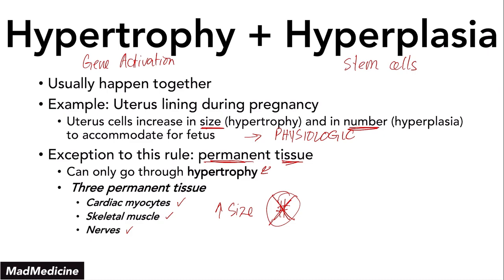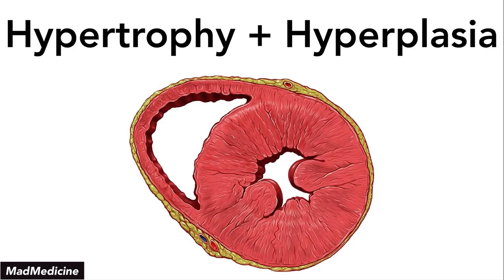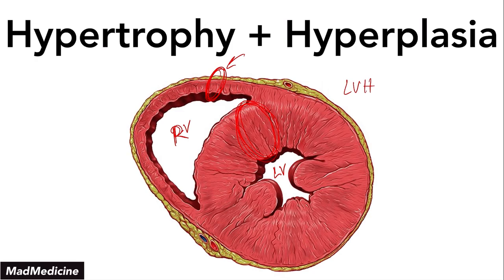Let's talk about cardiac myocytes: when your heart is placed under a lot of pressure, such as with uncontrolled hypertension over the course of a year, your cardiac myocytes grow in size and you get a hypertrophied heart. Looking at the heart tissue here, the left ventricular wall has undergone hypertrophy — this is called left ventricular hypertrophy — whereas the right ventricle is still its normal size. This is an example of only hypertrophy going down in permanent tissue.